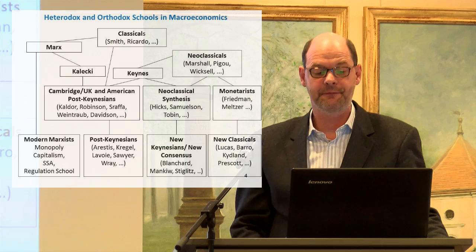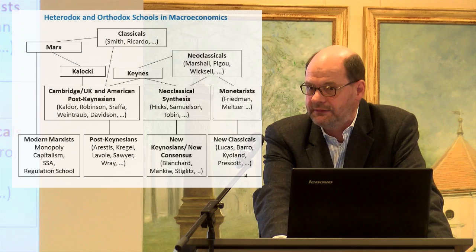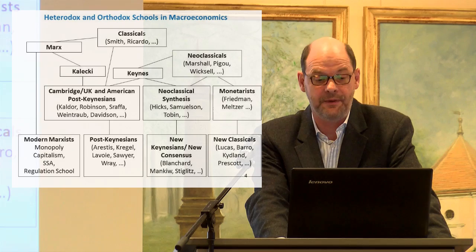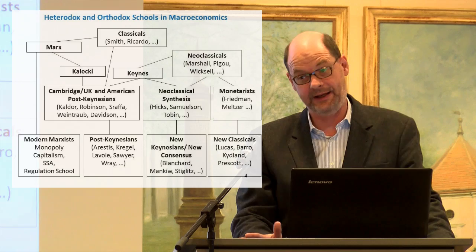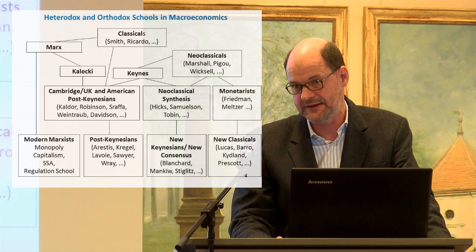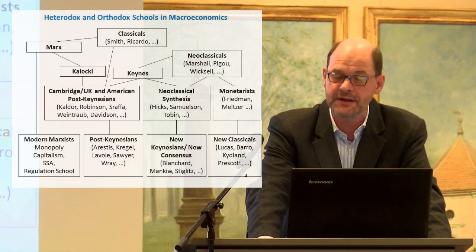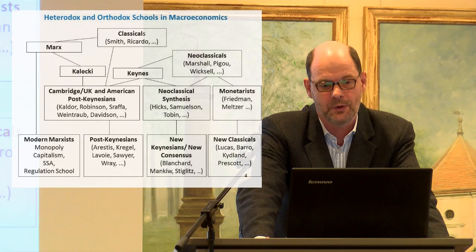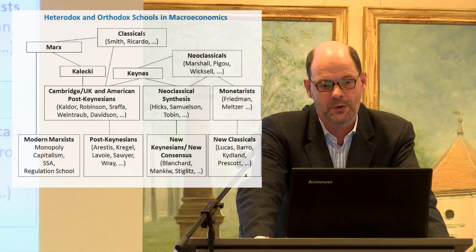Then we have the post-Keynesians — I will talk about them for the remaining 85 minutes or so. Post-Keynesian economics has its roots in Cambridge UK and the American post-Keynesians, who were on the one hand very much influenced by Keynes, and on the other hand — particularly the Cambridge post-Keynesians, people like Joan Robinson — were very much influenced by Michał Kalecki, the Polish economist who had discovered the principle of effective demand, which is the main foundation of post-Keynesian economics, even a couple of years before Keynes in the early 1930s.